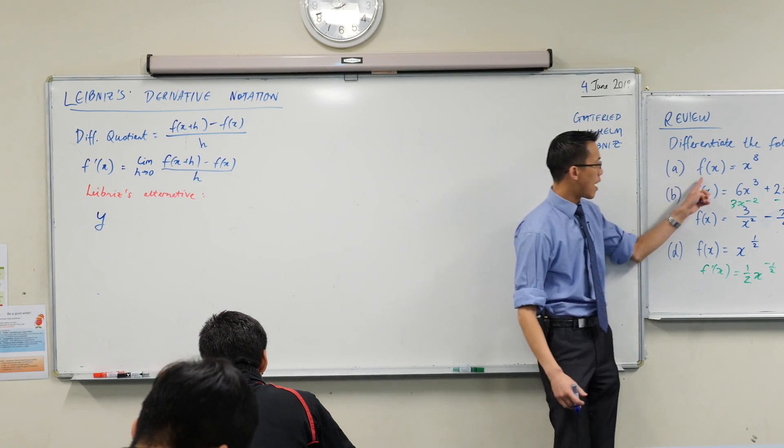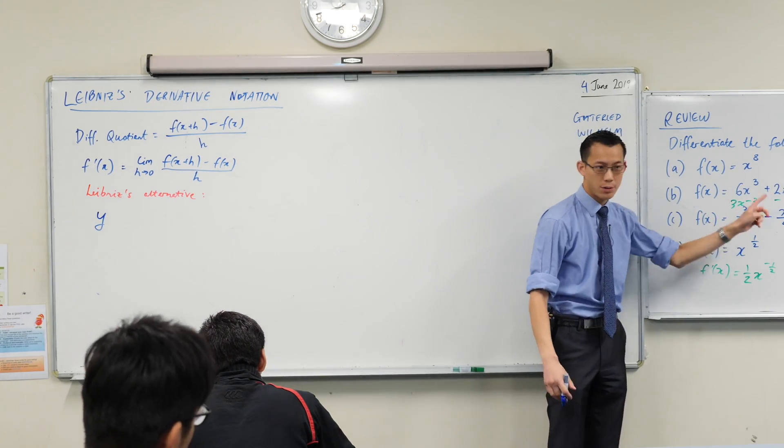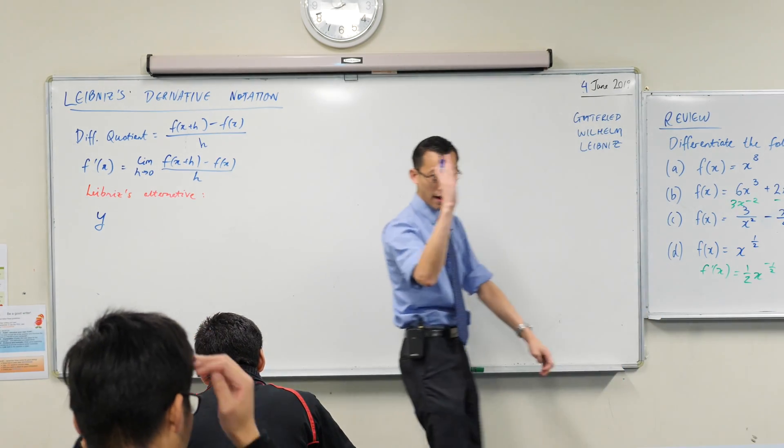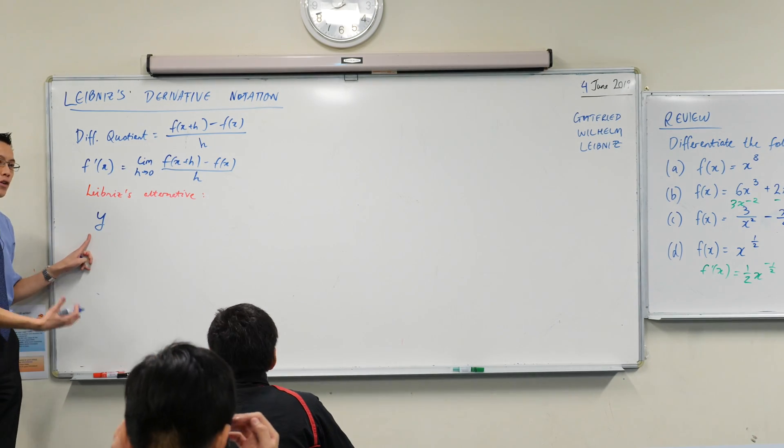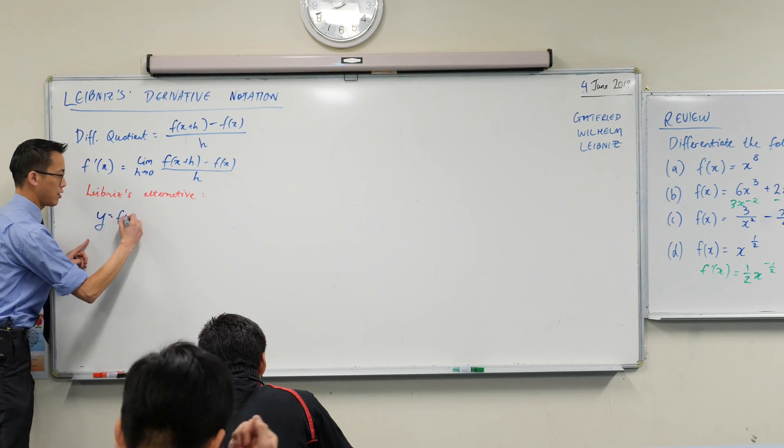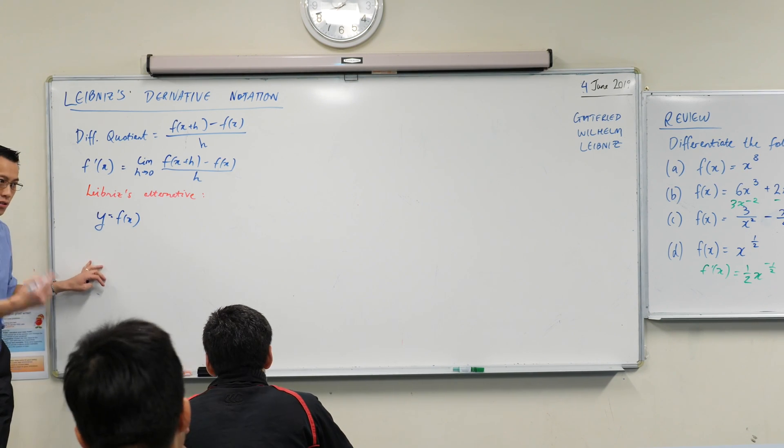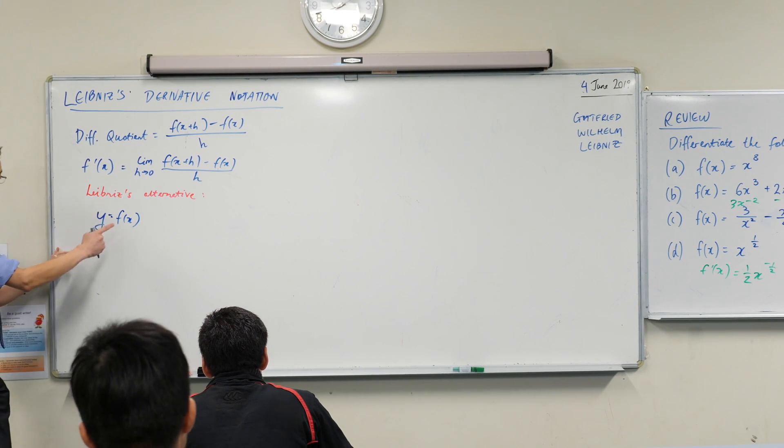Right? We've seen this before. I could have asked you, please graph y equals this, or y equals this, y equals this, etc. Y is our vertical axis, x is our horizontal axis. So we've seen this before, right? If we've got y as our function of x, right, we can introduce this new way of talking about the same derivative.